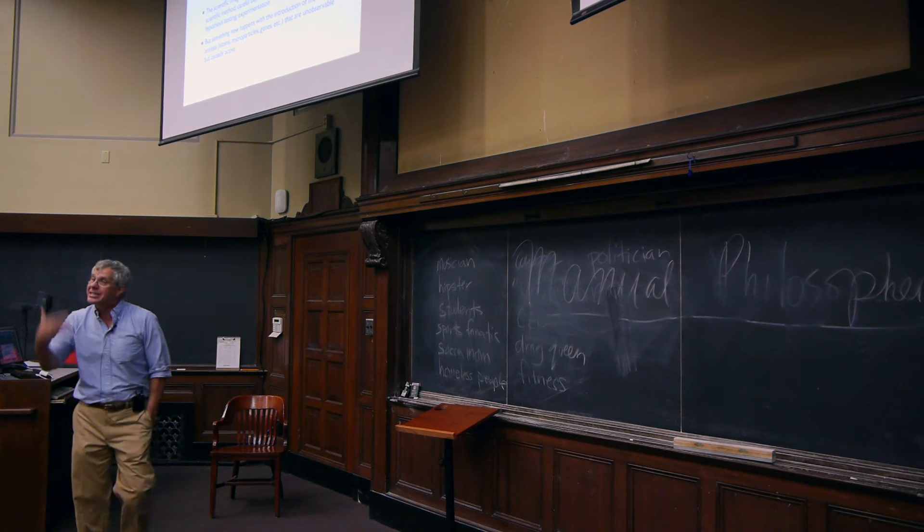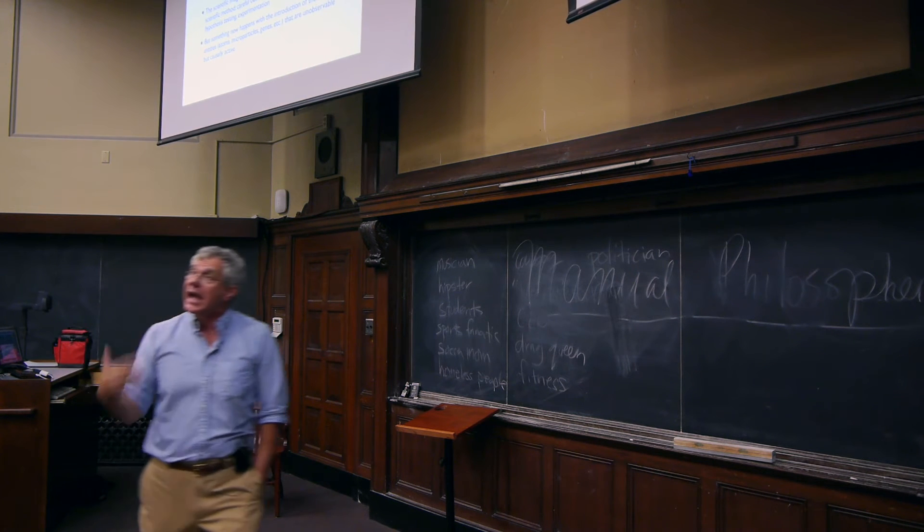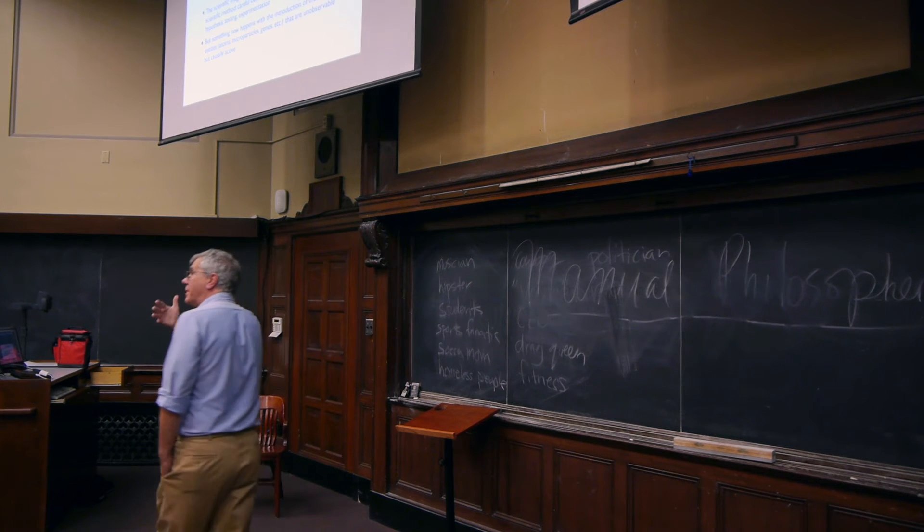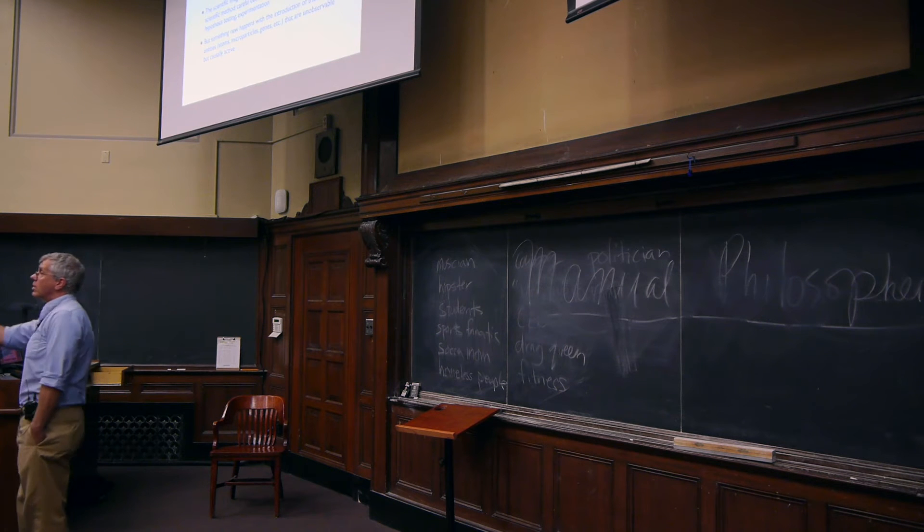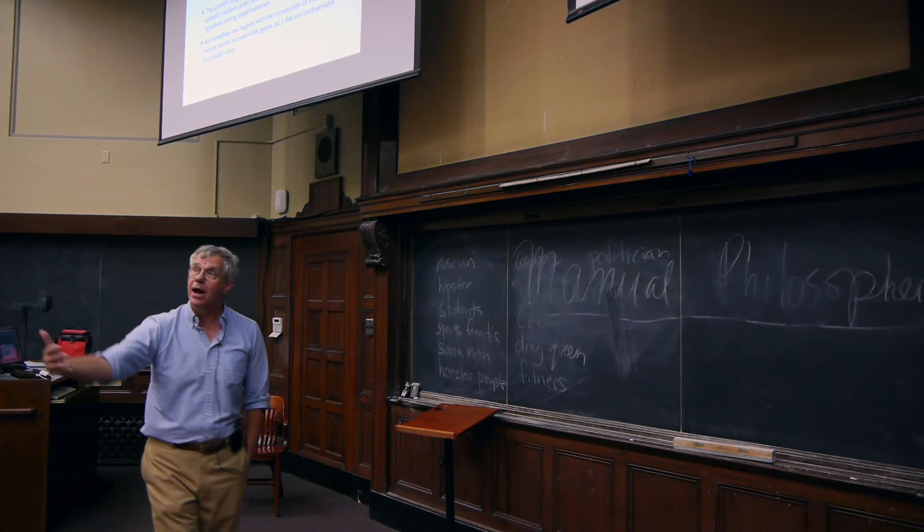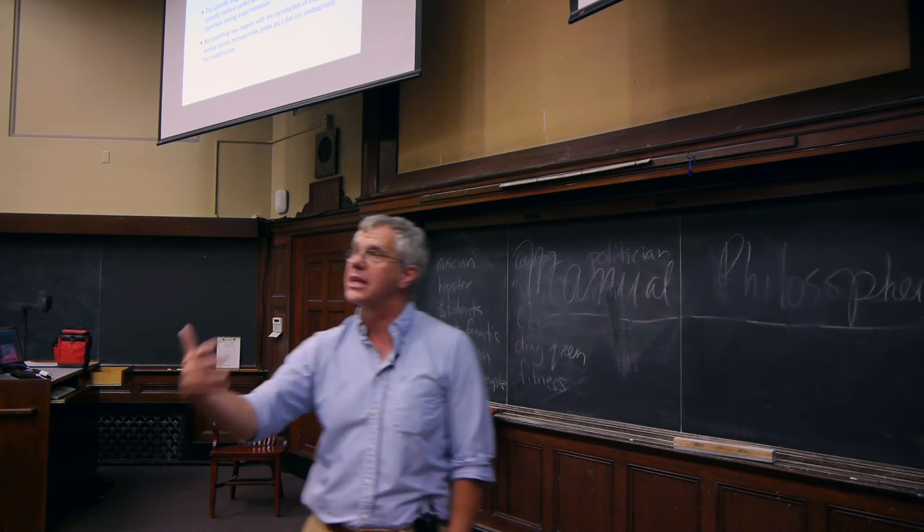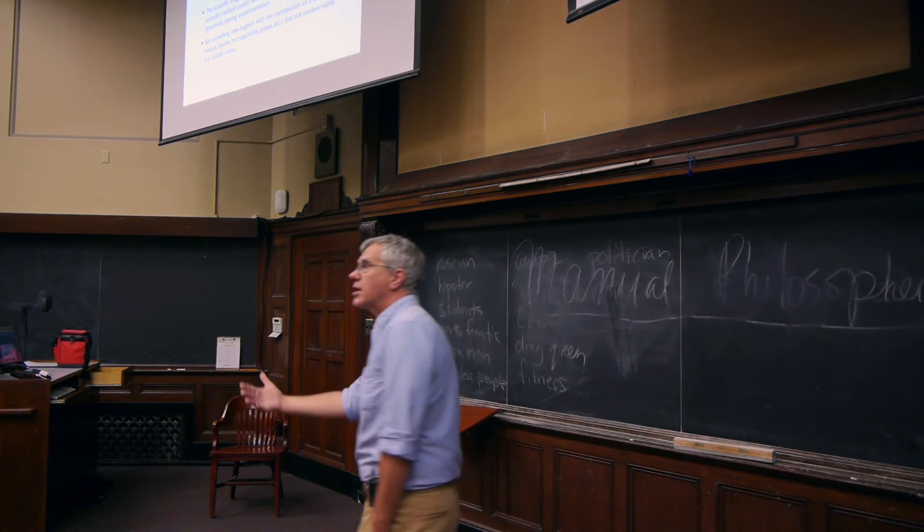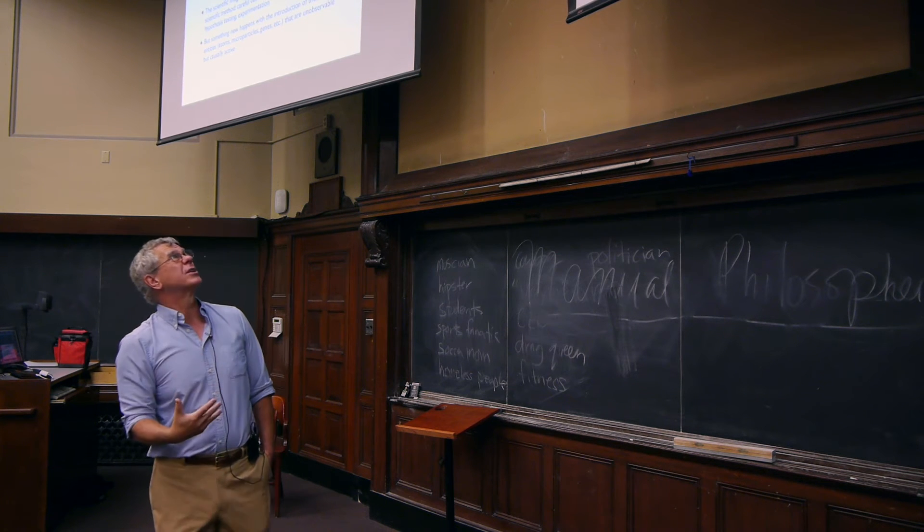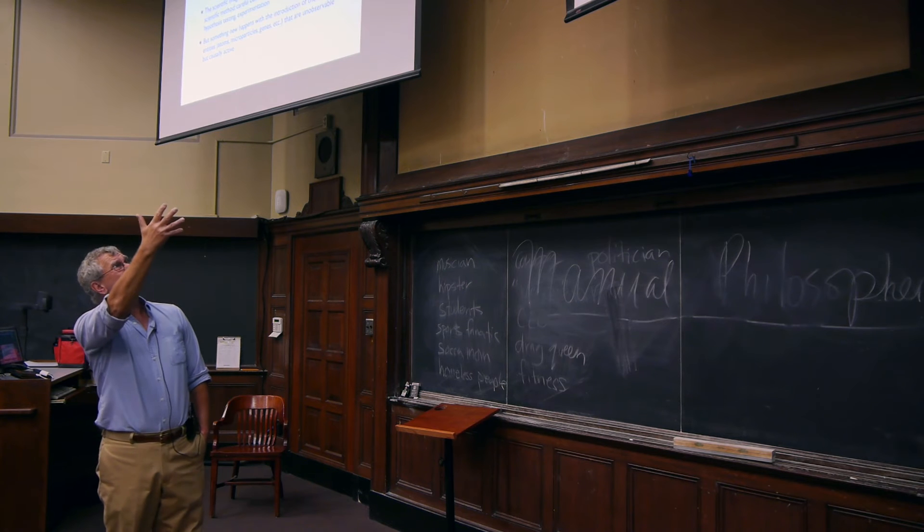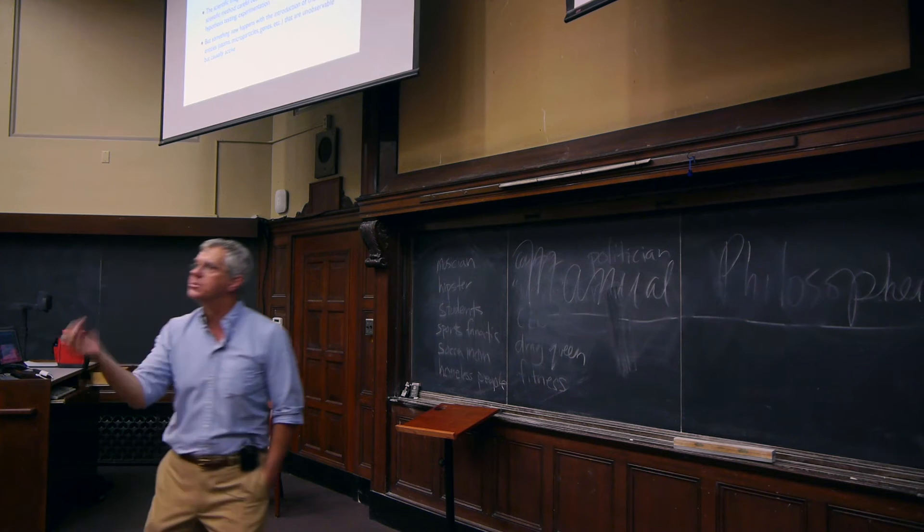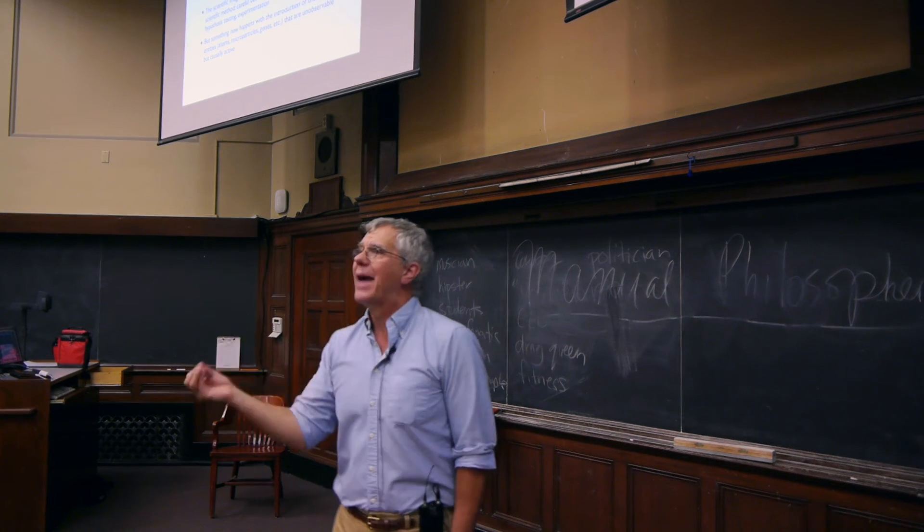The scientific image is a different image of ourselves and of the world. It's of the world as consisting, for example, of microparticles, of ourselves as being physical beings driven by physical forces. It is of a world that is controlled by maybe unconscious psychological forces or economic forces or a variety of other kinds of forces that social scientists, that psychologists, that physicists and others have proposed as being fundamental to the way the world works. And so as soon as you get, you might say, the introduction of theoretical objects, things that are not themselves observable, something dramatic changes.